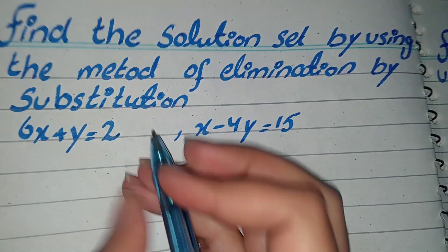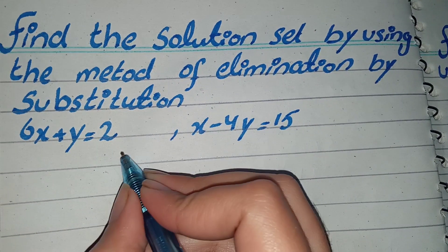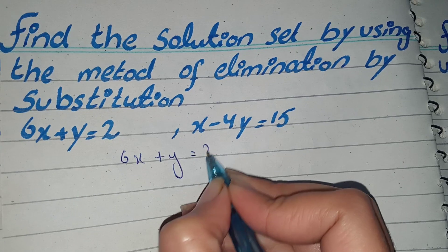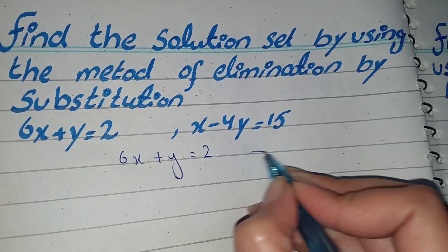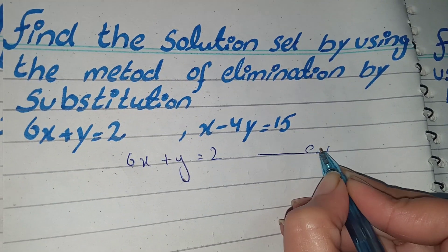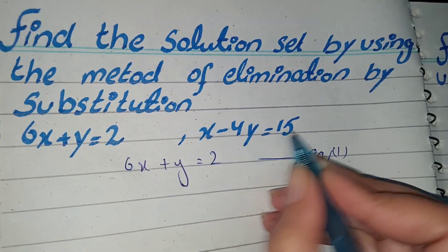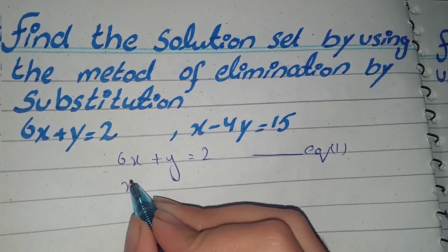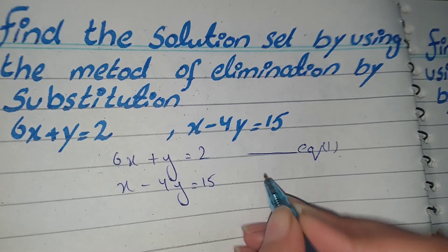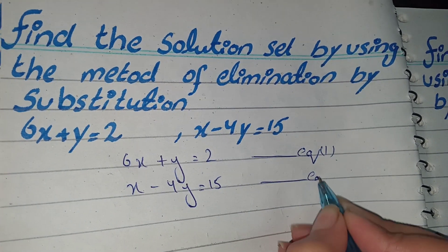What will we do? First of all, we say equation 1 and equation 2. 6x plus y is equal to 2 — this is equation 1. And x minus 4y is equal to 15 — this is equation 2.